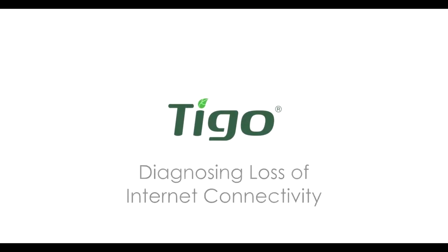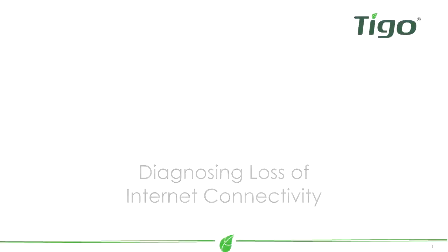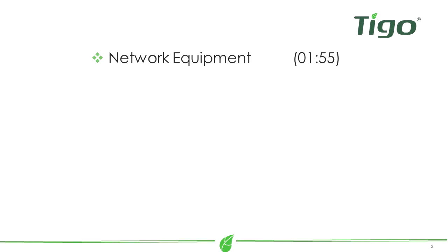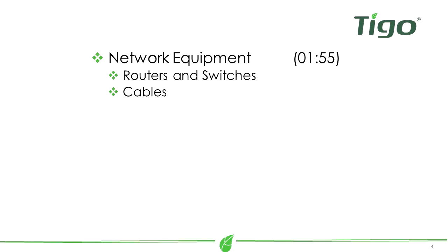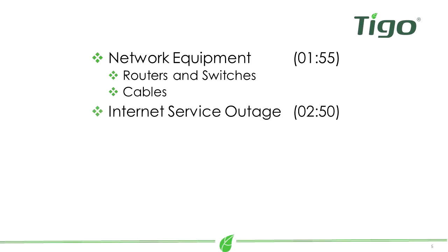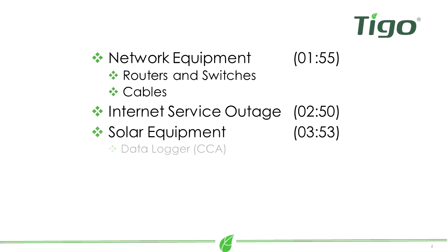What can cause this problem? How is internet connectivity lost? First, we will look at your network equipment, such as routers and switches. Next, we will determine if you have a general internet outage. Finally, we will look at your solar equipment to see if it is working properly.